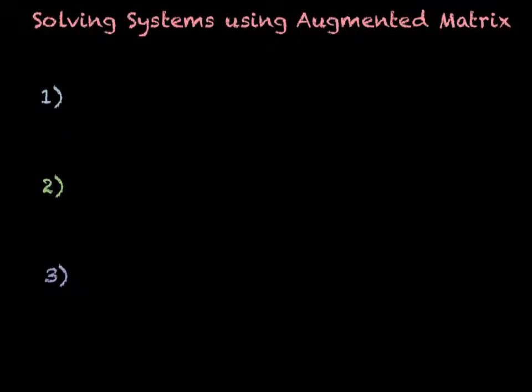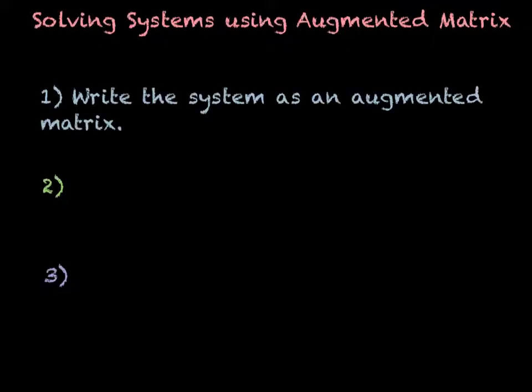Solving systems using augmented matrix. There are three steps to solving a system with an augmented matrix. The first thing you have to do is to actually write the system as an augmented matrix, with the coefficient matrix on the left and then a dashed line, and then your solution matrix on the right.